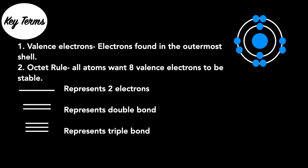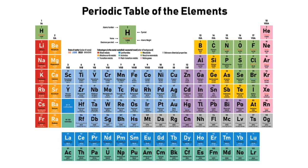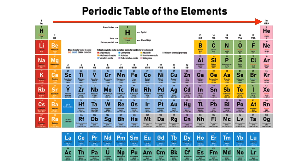One last thing you need before drawing Lewis dot structures is the periodic table. Period numbers are shown in rows across the periodic table and group numbers are the columns going up and down. As you read the periodic table from left to right, electronegativity and ionization increase. As you move from the bottom to the top, they also increase.